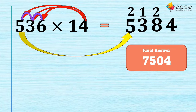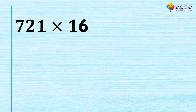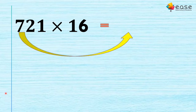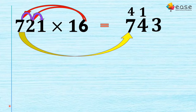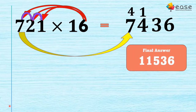Let's take another example: 721 multiplied by 16. First, write 7 as it is. Then 6 × 7 = 42, 42 + 2 = 44. Then 6 × 2 = 12, 12 + 1 = 13. Then 6 × 1 = 6. The final answer is 11536. You can add the carryovers yourself — we have done many sums like this in class.